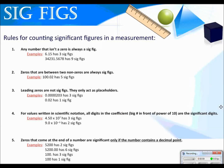Zeros that come at the end of a number are significant only if the number contains a decimal point. For example, 5200 has two sig figs because there's no decimal, so those last zeros don't count. But 5200 with a decimal point — that decimal is telling us the number is exact, so all digits count: six sig figs. For 100 with a decimal place at the end, that's being exact, so all three sig figs count. But 100 without a decimal is only one sig fig, because we're assuming the number is rounded.